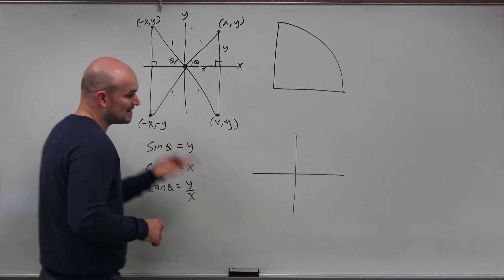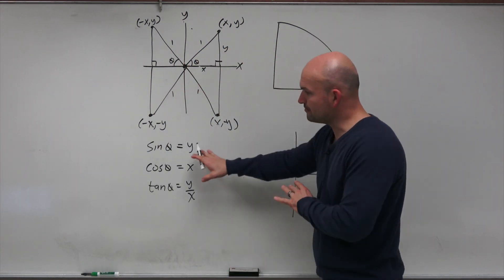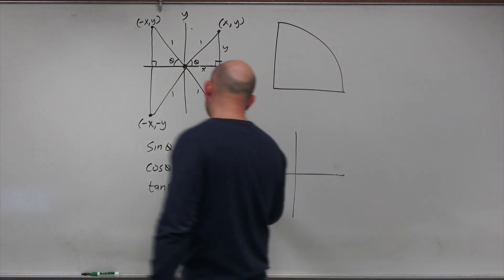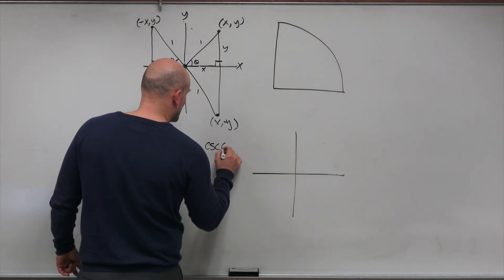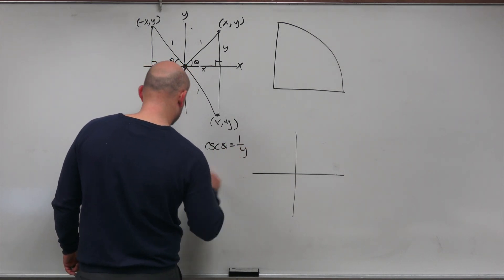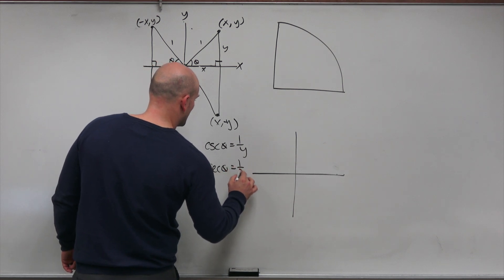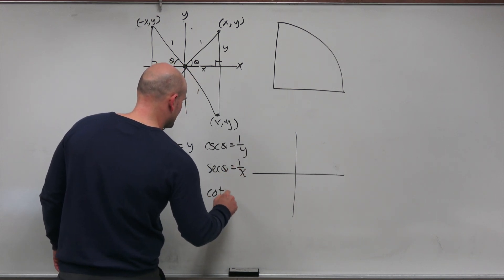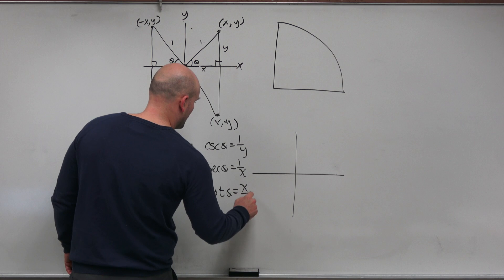We also have to include our reciprocal functions. Remember, sine is the reciprocal of cosecant, so we can write cosecant as 1 over y. Secant of theta is 1 over x, and cotangent of theta is x over y.